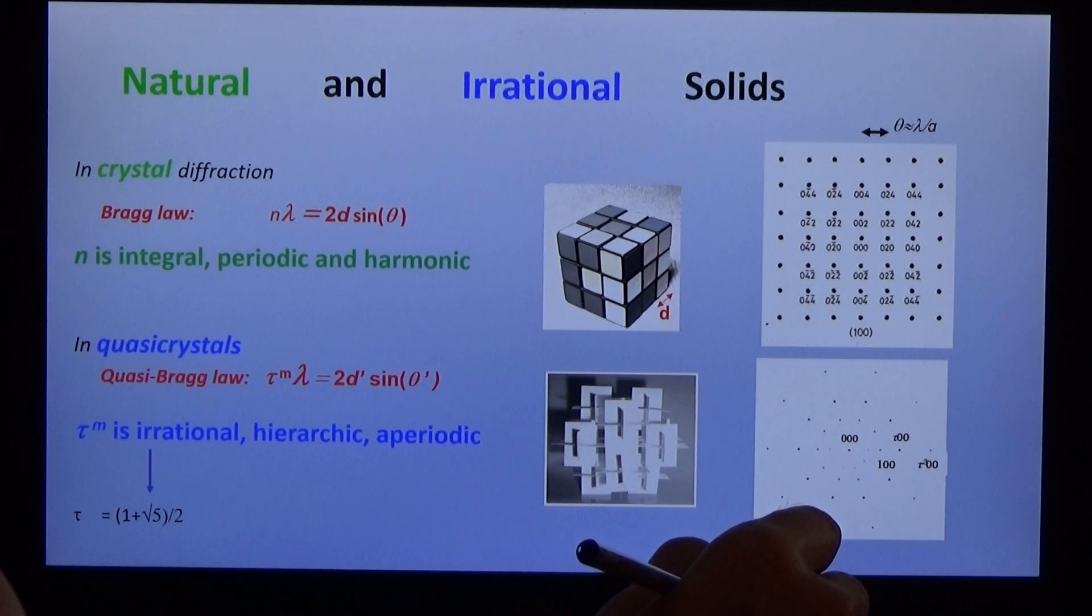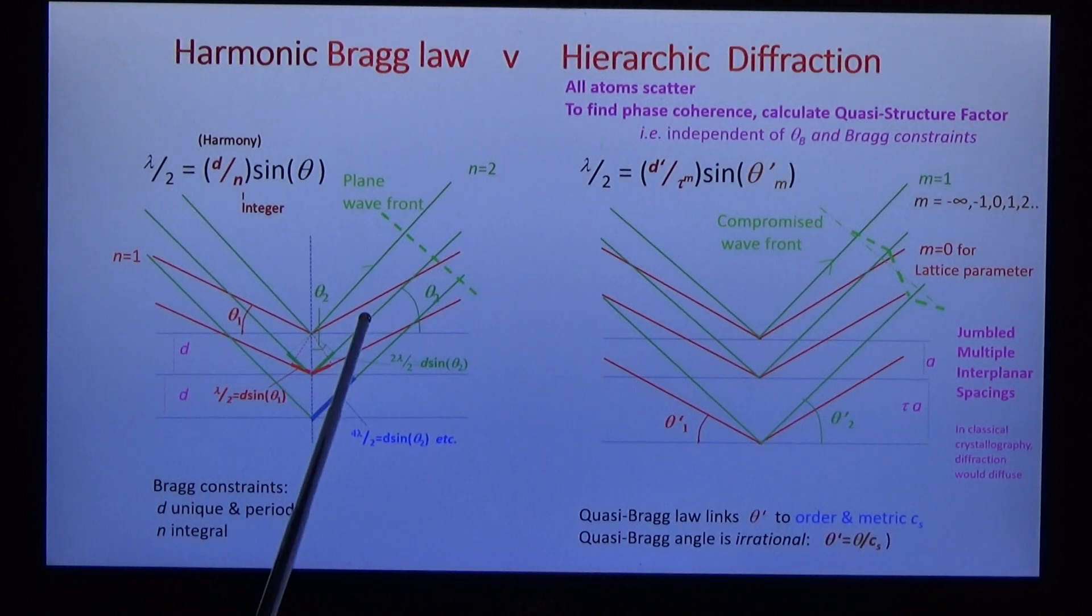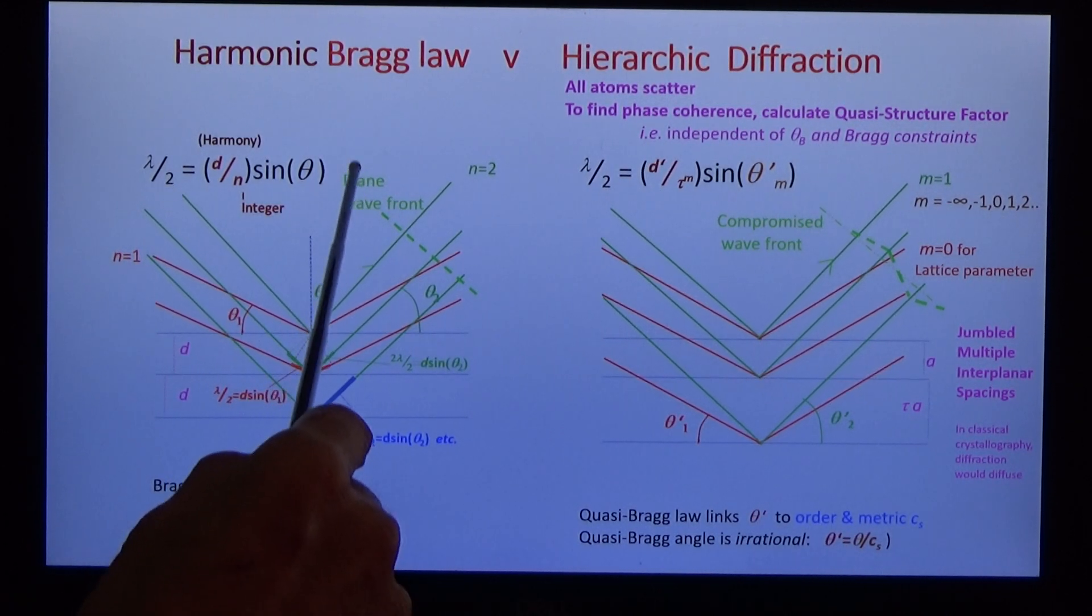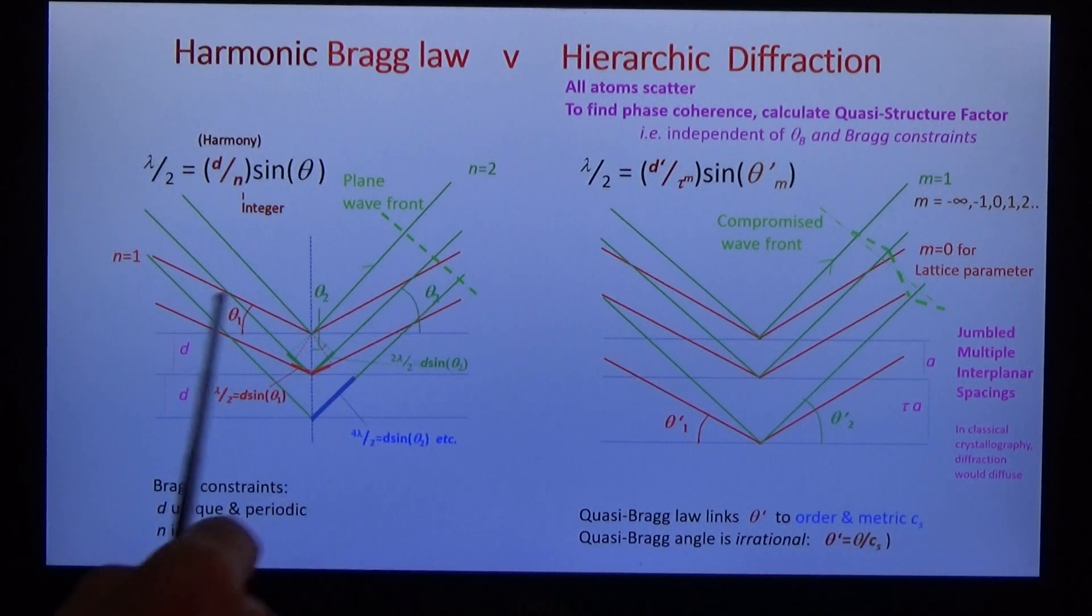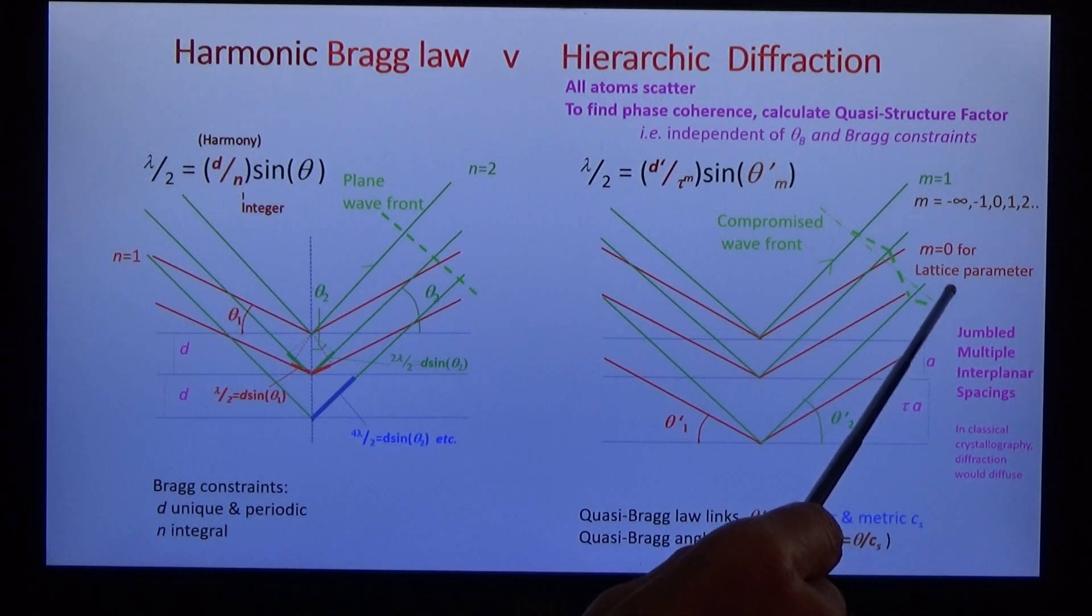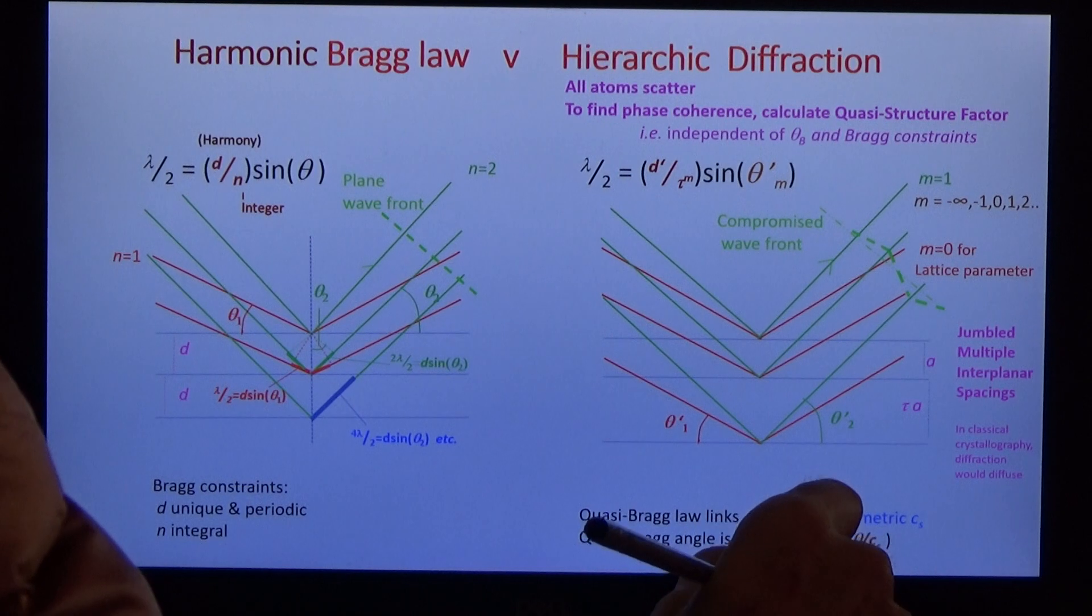But we can calculate the structure factor. First, a word about harmony. Look at the red waves. The difference in path length is equal to lambda. And the wavefront due to the scattering is a plane wave. The interplanar spacing d is unique and periodic. Quasi-crystal is completely different. There are multiple interplanar spacings and they're jumbled together. The wavefront is compromised. But we see how to understand that.